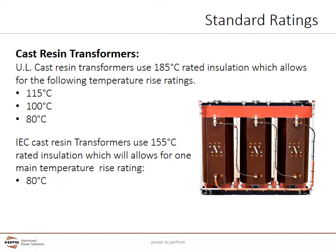Cast resin transformers' limiting factor is the epoxy resin used to encapsulate the windings. In North America, insulation systems are typically rated for 185°C, while in the rest of the world a lower 155°C system is much more common. UL cast resin transformers using 185°C rated insulation systems allow for temperature rise ratings of 115°C, 100°C, and 80°C. IEC cast resin transformers using the 155°C rated insulation system only allow for one main temperature rise rating: 80°C.